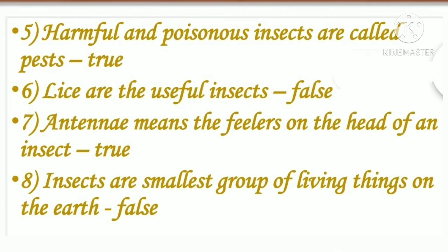Sixth one: lice are the useful insects. False. Seventh one: antenna means the feelers on the head of an insect. True. Eighth one: insects are the smallest group of living things on the earth. False.